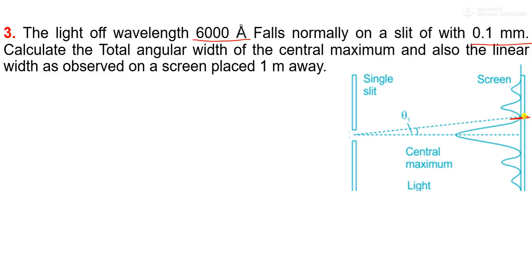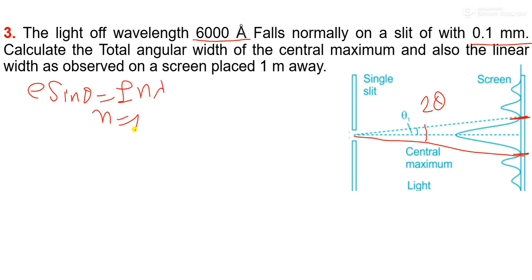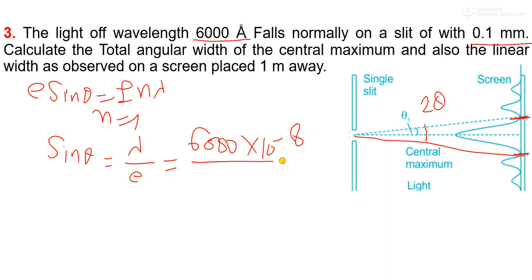This is the upper first minima and this is the lower first minima. Suppose this angle is theta, so this angle is also theta, and the total angular width is 2 theta. The condition for minima is e sin theta equal to plus minus n lambda. For first minima n equals 1, so sin theta equals lambda by e. Here lambda is 6000 angstrom and e is 0.1 mm. Converting both to centimeters: 6000 into 10 to the power minus 8 centimeter upon 0.1 into 10 to the power minus 1, giving 6 into 10 to the power minus 3.